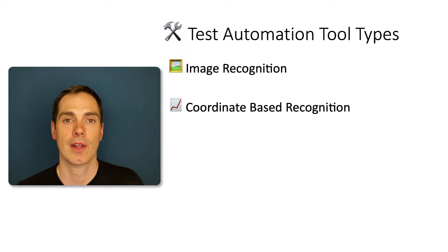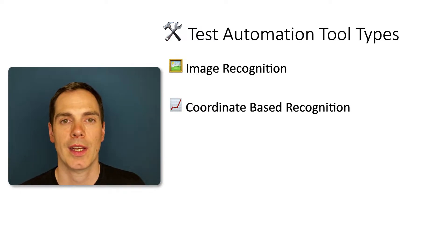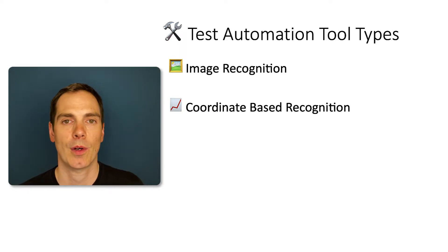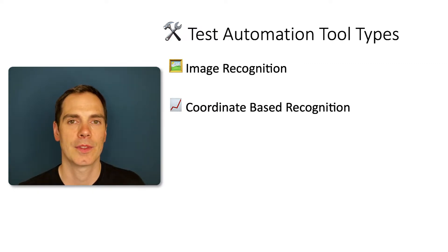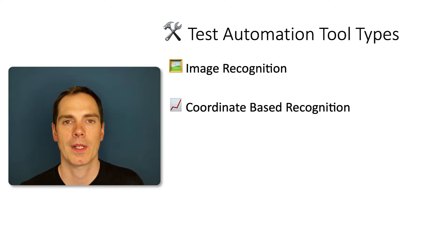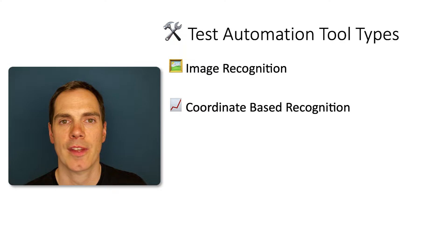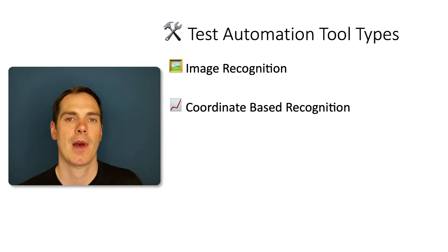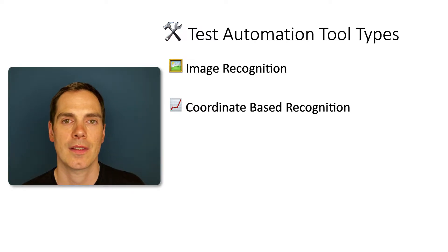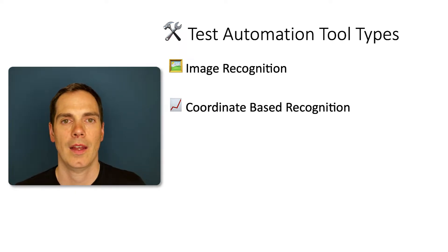Then there are coordinate-based recognition tools. They use x and y coordinates to save the right spot of a button or element to tap it later. These kinds of tools are more or less outdated and not really on the market anymore. Back in the beginning of mobile testing in 2010 and 2011 there were some tools using this approach, but as you can imagine, x and y coordinates change especially when you scroll on the screen, making it really error-prone and not practical.